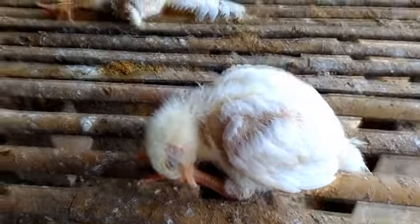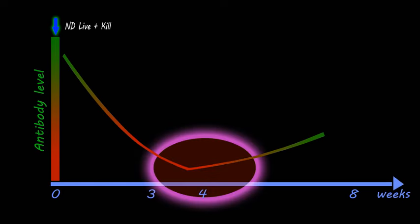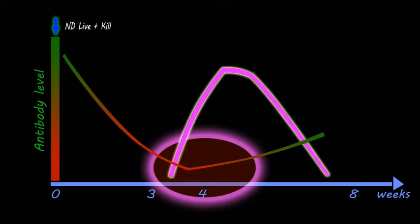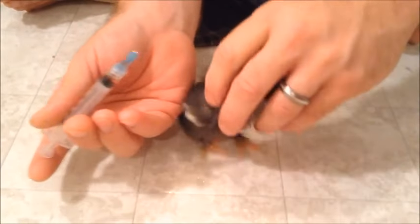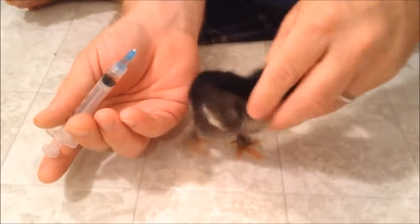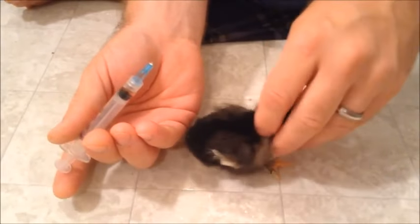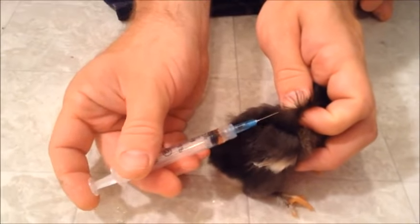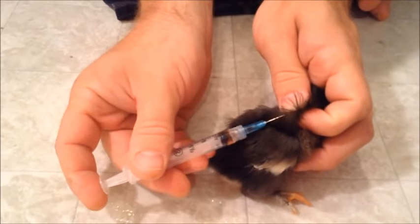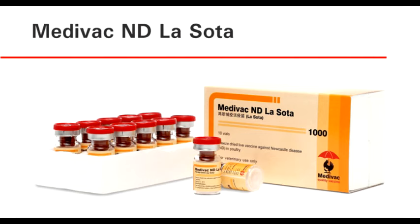Penyebaran: Penyakit ND menyebar secara cepat melalui udara, pakaian, peralatan, burung dan pakan. Pencegahan: Pencegahan dilakukan dengan cara memberikan vaksin ND, misalnya vaksin ND Lasota dan ND Klon.